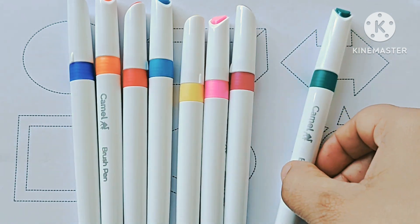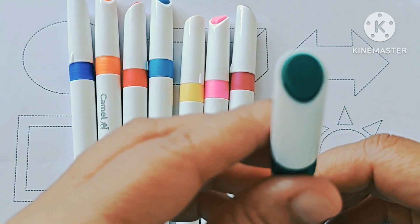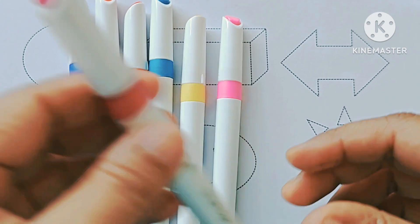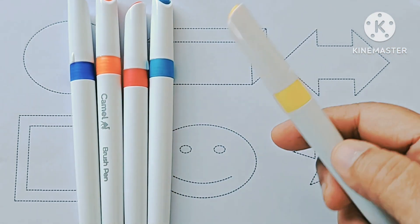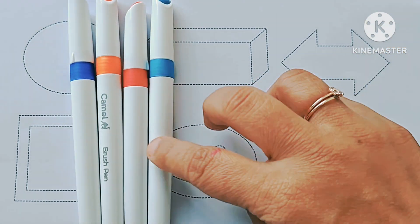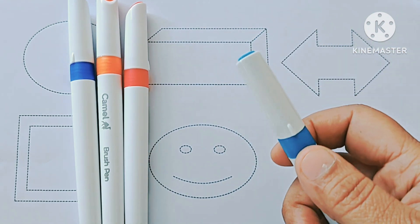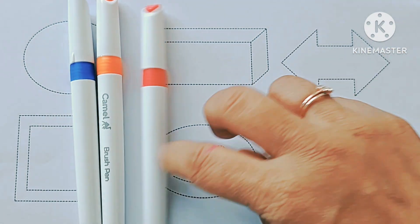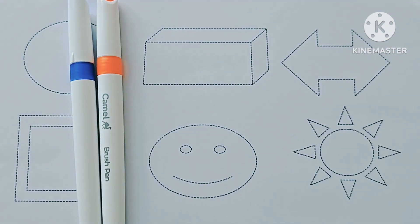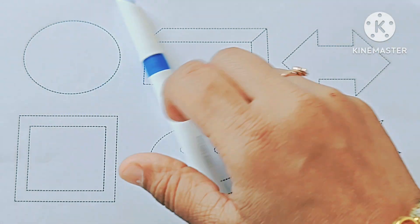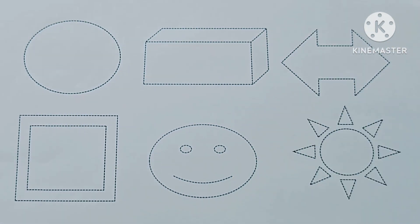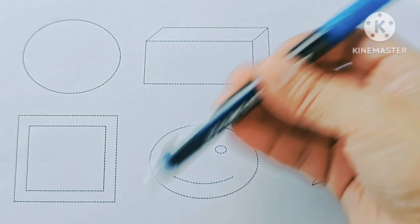Brown color, green color, violet color, pink color, yellow color, sky blue color, red color, orange, blue color. Now let us draw the shapes and symbols. This is blue color.